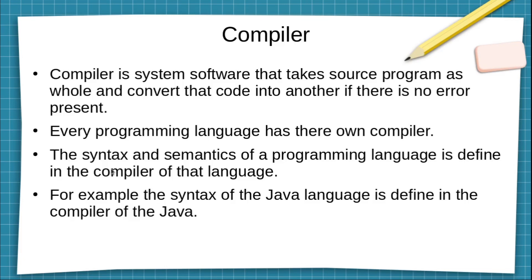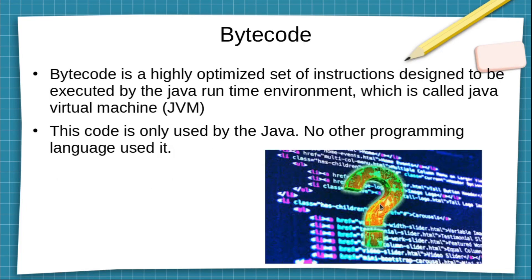For example, if we divide anything by zero, that is a wrong operation — and this thing is defined in the compiler of that language. The syntax of the Java language is defined in the Java compiler.